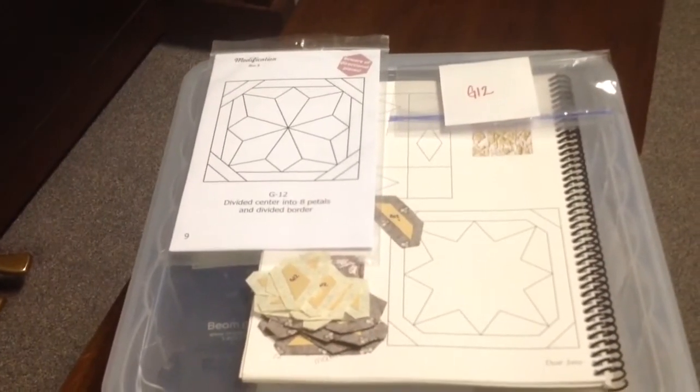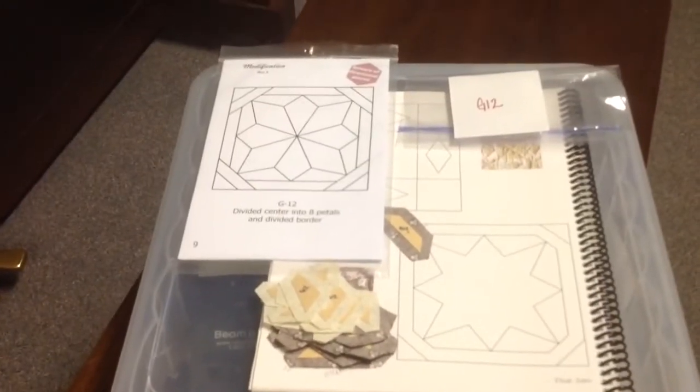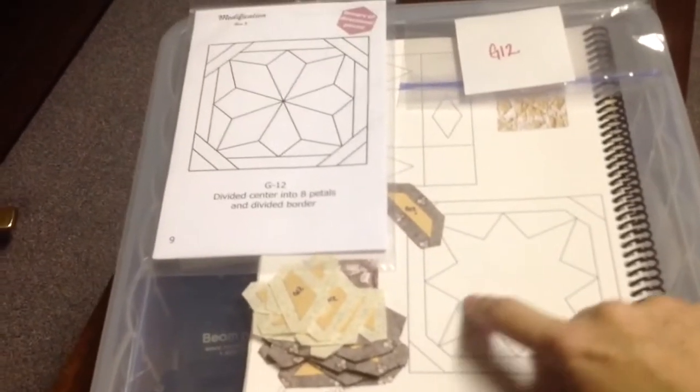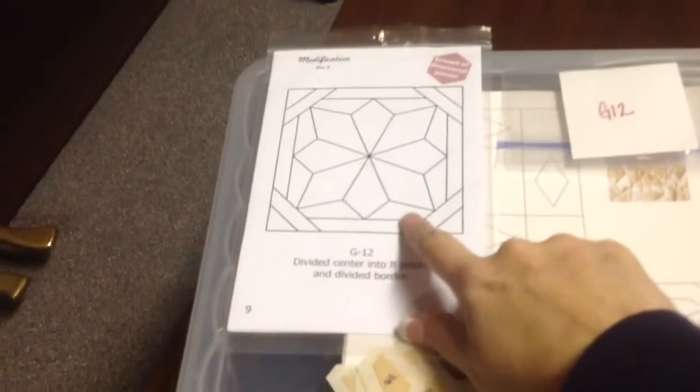Today, we're working on G12. This is an EPP modified block, because the book doesn't have little dividers, so this makes it easier to English paper piece.